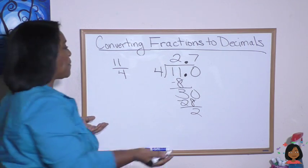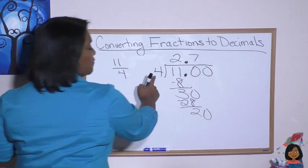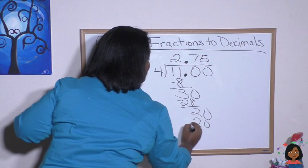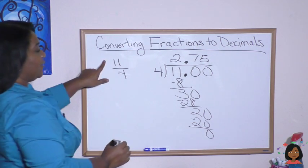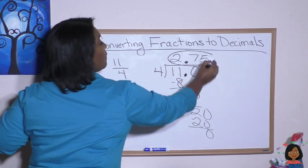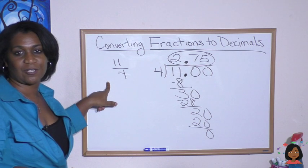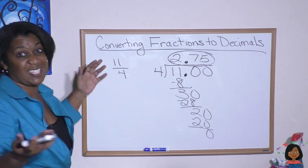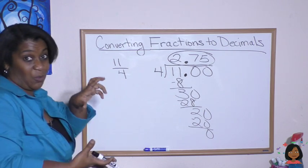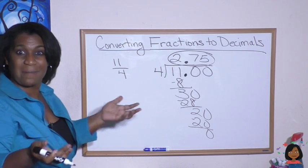Are we done? Let's keep it going. Add a zero and bring it down. 4 goes into 20, five times, and that means we are done. So 11 over 4 — eleven-fourths — is the same thing as 2.75, which makes sense because this is an improper fraction, which means it's a mixed number in disguise. This is 2 — a whole number — and a fraction, which is really another way of showing a mixed number.